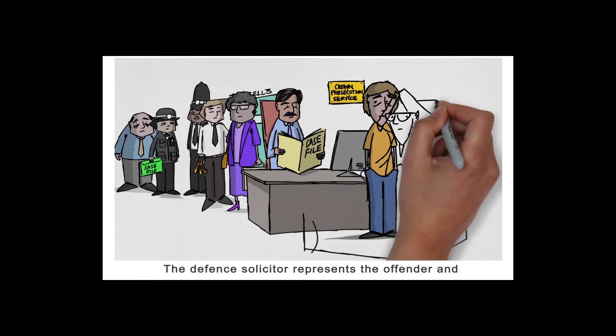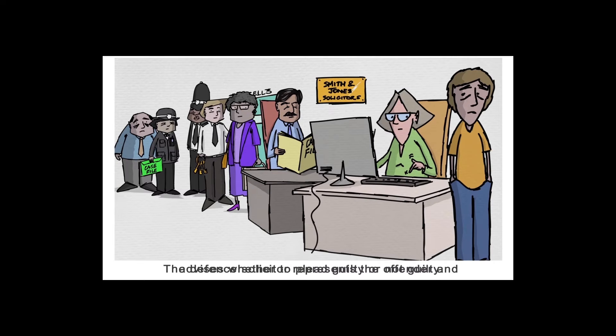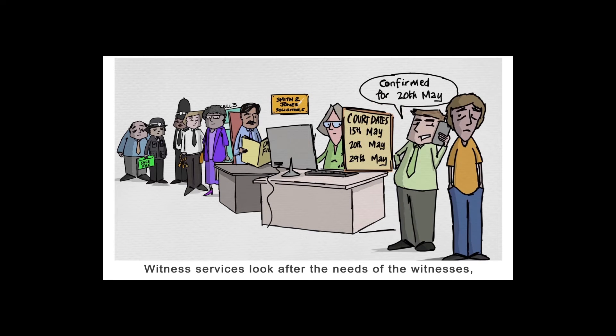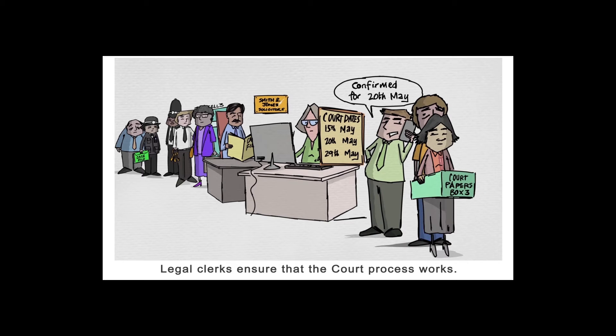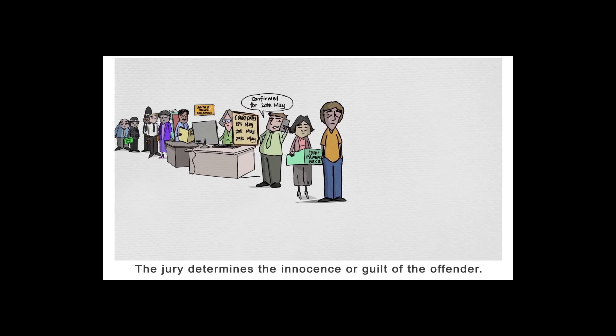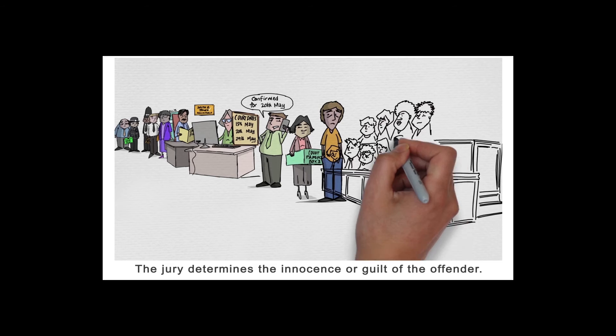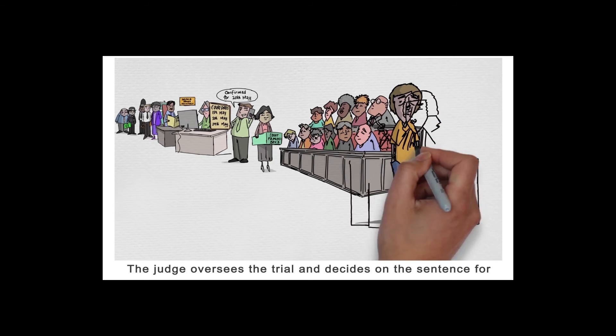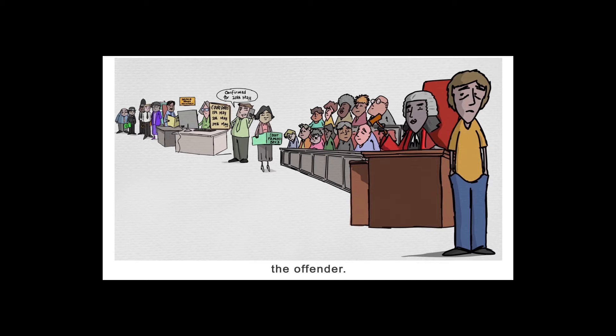The Crown Prosecution Service ensures that there is sufficient evidence to prosecute the offender. The defence solicitor represents the offender and advises whether to plead guilty or not guilty. Witness services look after the needs of the witnesses, including the victim, if they are required in court. If the offender pleads guilty, the victim will not be asked to attend court. Legal clerks ensure the court process works. The jury determines the innocence or guilt of the offender. The judge oversees the trial and decides on the sentence for the offender.